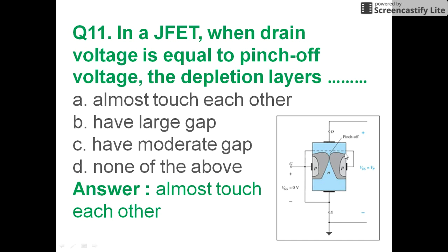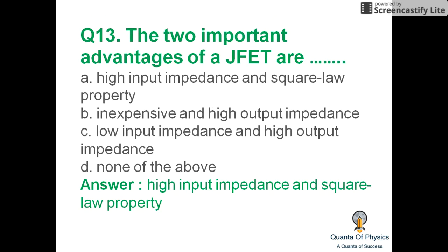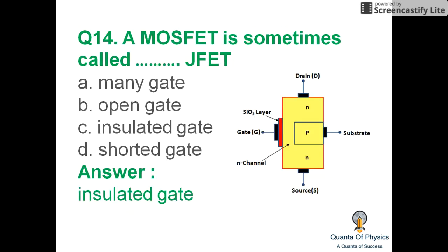In a JFET, when drain voltage equals pinch-off voltage, the depletion layers almost touch each other — the gap becomes zero. IDSS is known as the drain-to-source current with the gate shorted. The two important advantages of JFETs are high input impedance and square-law property.